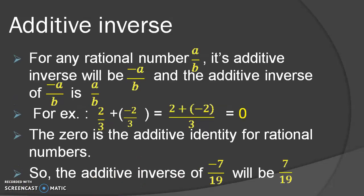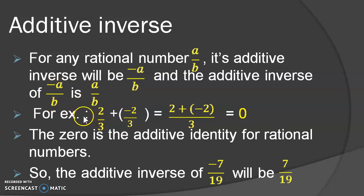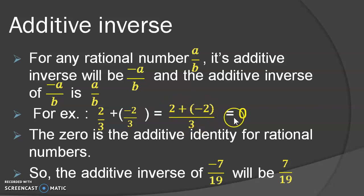Next topic is additive inverse. Let us consider the rational number A upon B. Then its additive inverse will be minus A upon B. And if we take minus A upon B, then its additive inverse will be A upon B. For example, if we add 2 upon 3 to minus 2 upon 3, after solving, we will get a result of 0. Hence, 0 is the additive identity for rational numbers — that means if we add 0 to any rational number, the number will remain that rational number itself. Now pause your screen and solve the following questions based on the additive inverse.